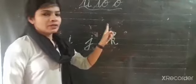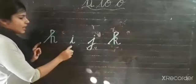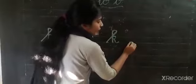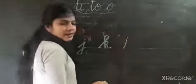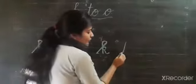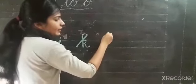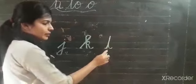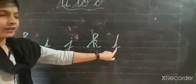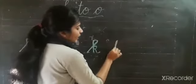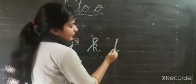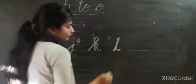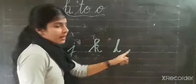Then what will come? H, I, J, K, L. So from the blue line you have to go up to the red line. Then come down with the same line and from here you have to do a small curve. L for lion.